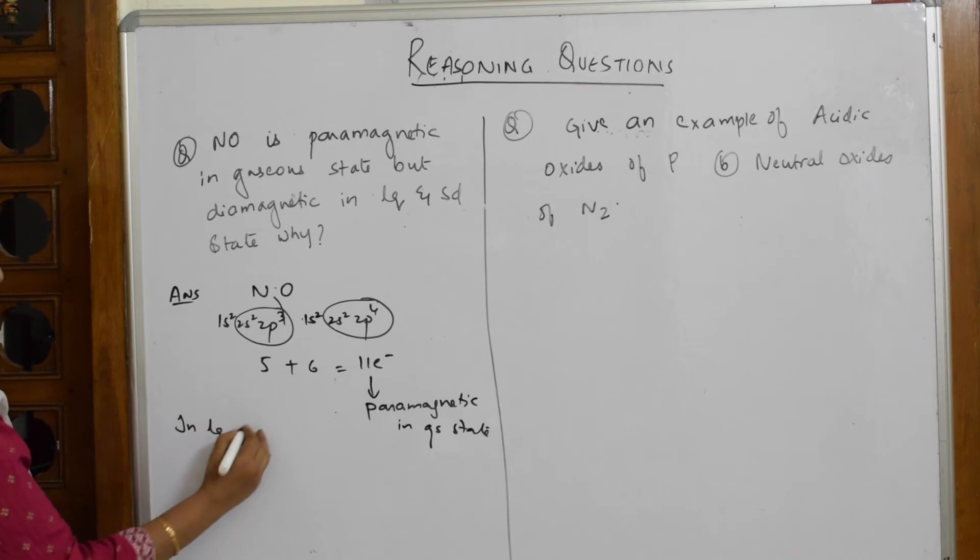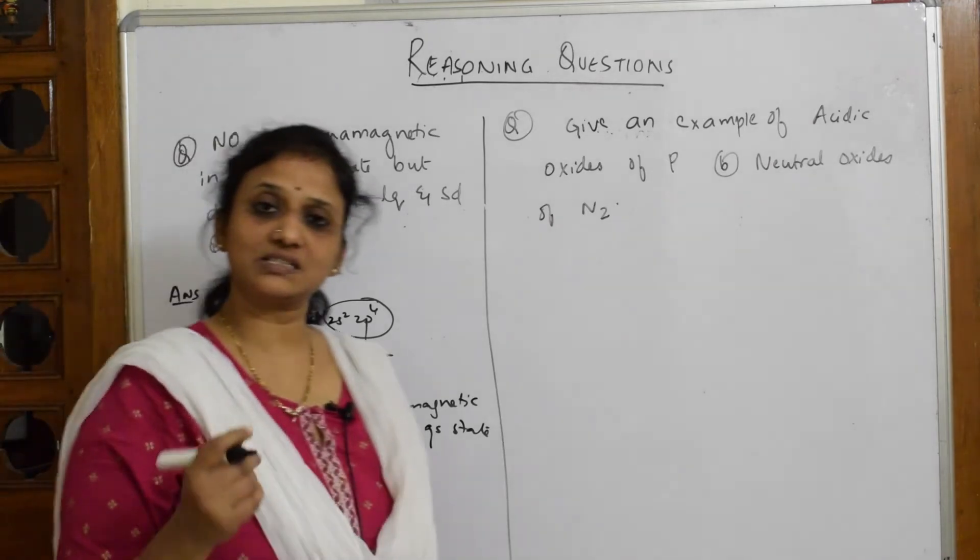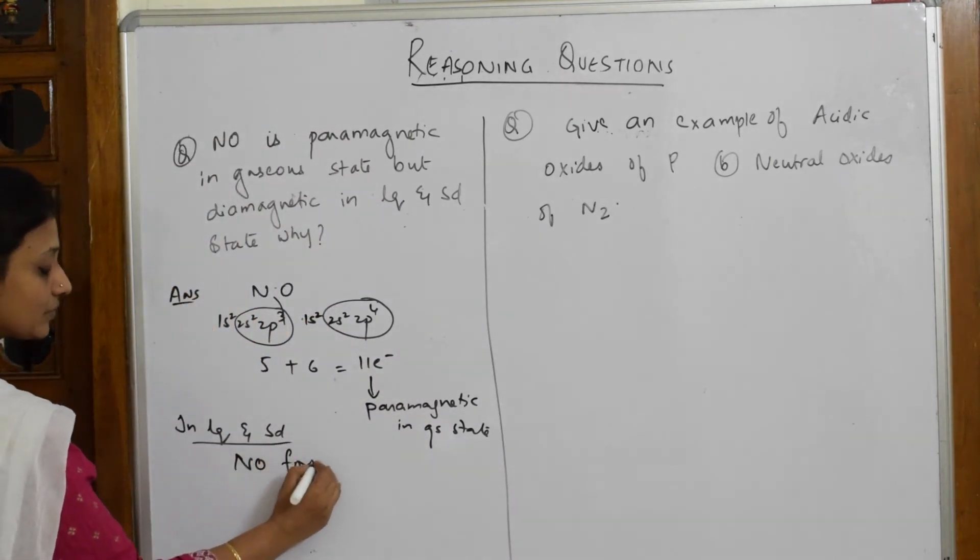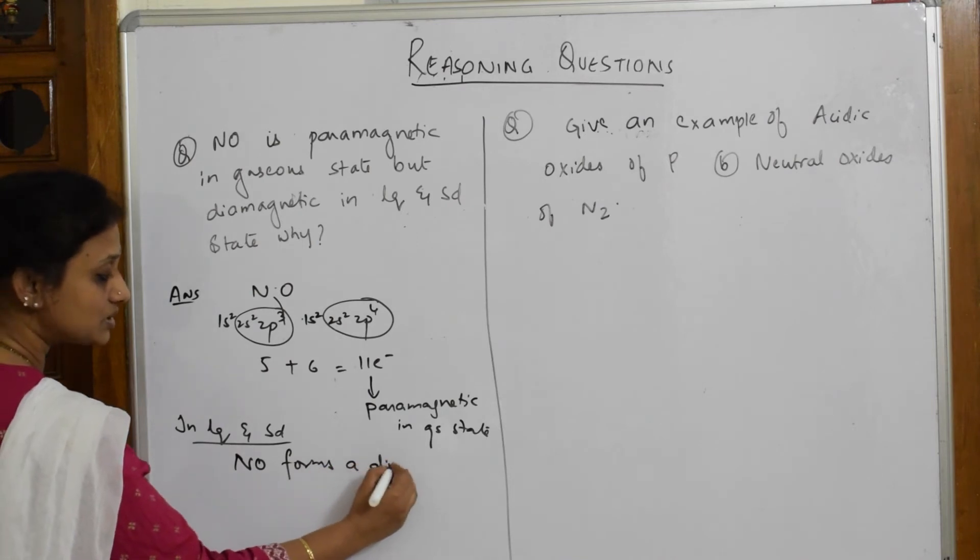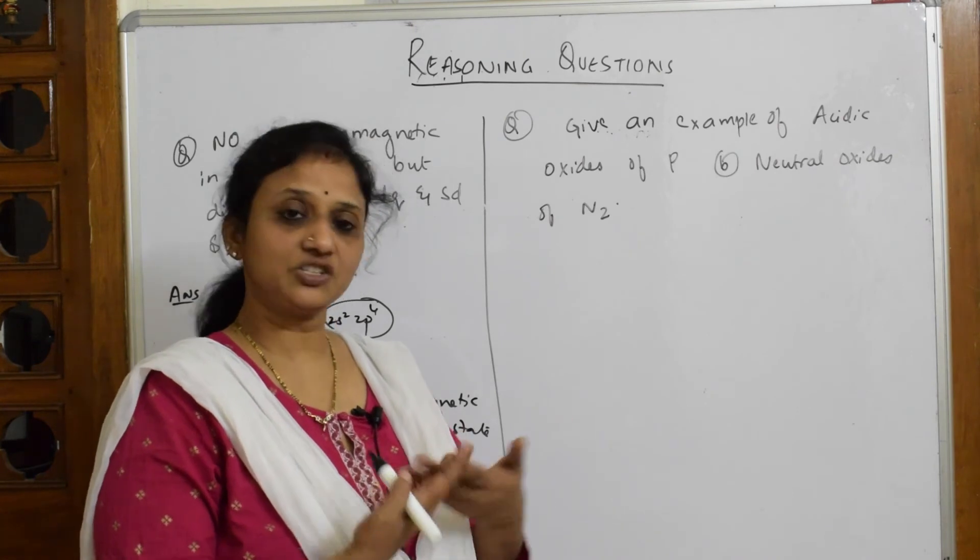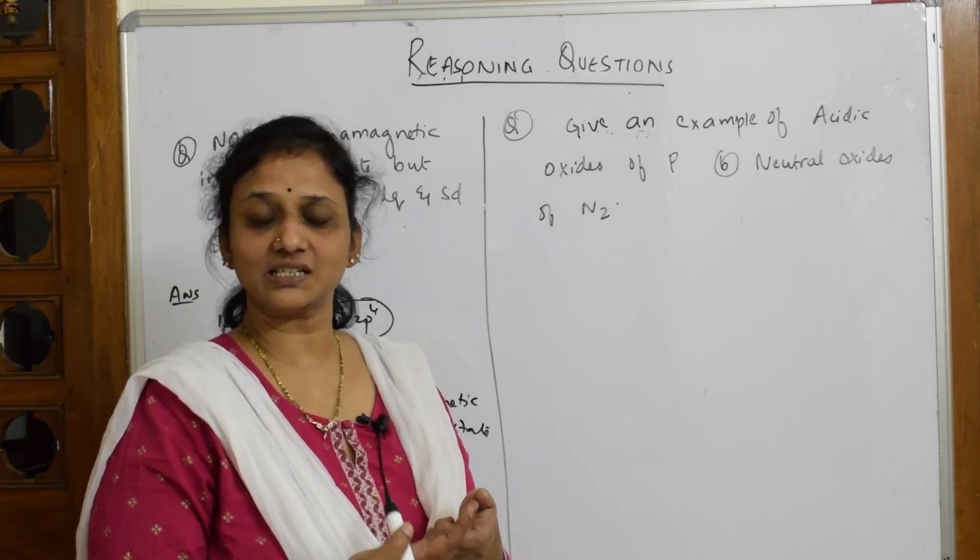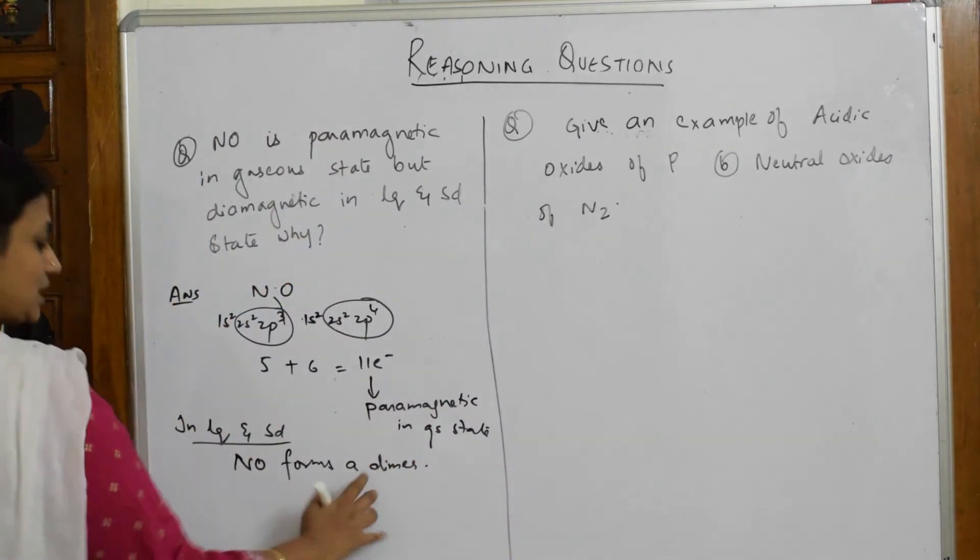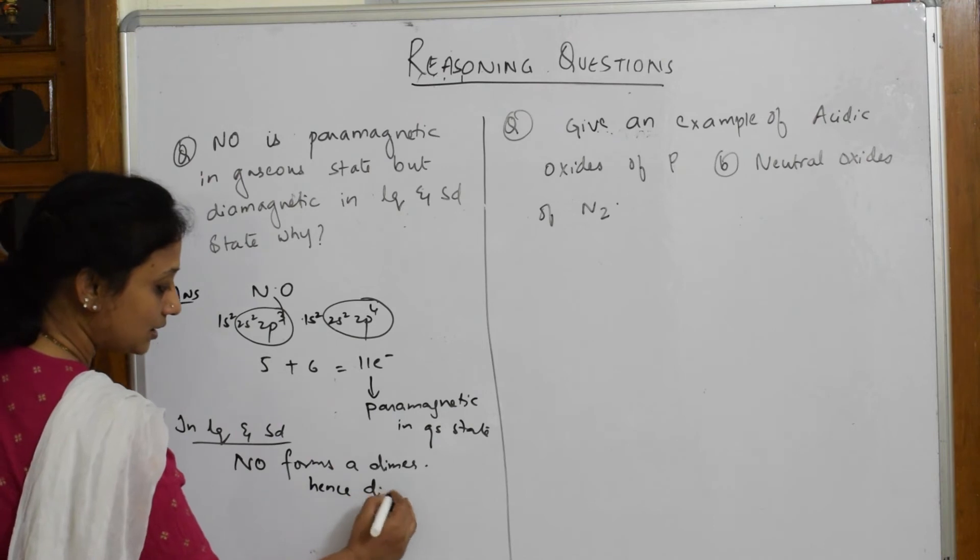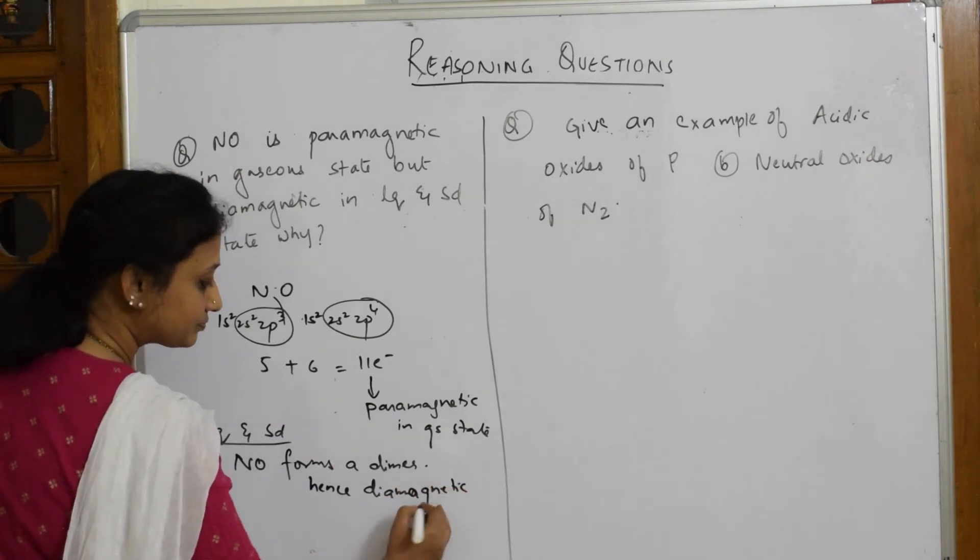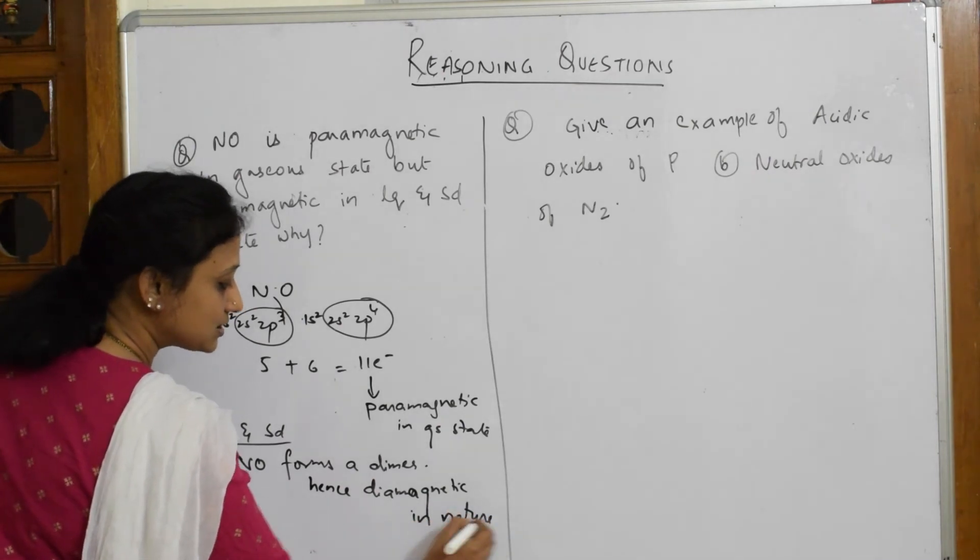What's going to happen? In liquid and solid state, NO forms a dimer. We have seen the structure. Most important keyword: NO forms a dimer. Dimer means two molecules together. When it forms a dimer, there is sharing of electrons. When sharing happens, it automatically attains an even number and becomes diamagnetic. Hence, diamagnetic in nature. Simple logic.